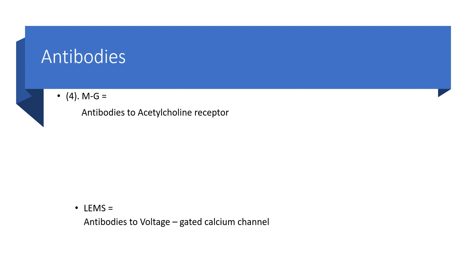How about antibodies? In myasthenia gravis, antibodies are directed against the acetylcholine receptor. But in Lambert-Eaton myasthenic syndrome, antibodies are against the voltage-gated calcium channel.